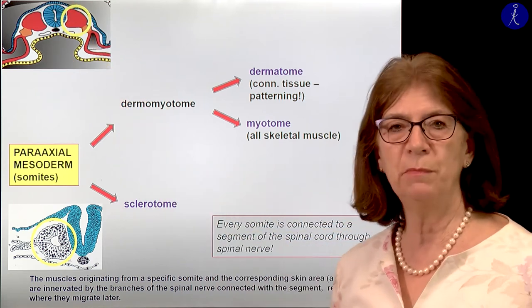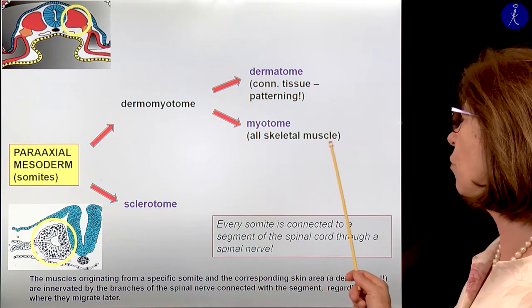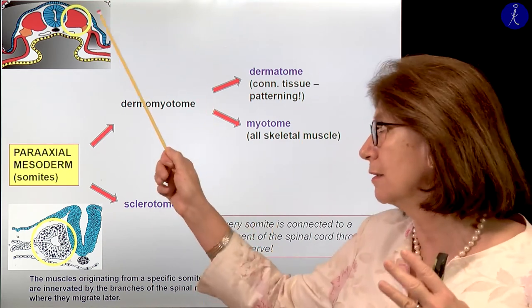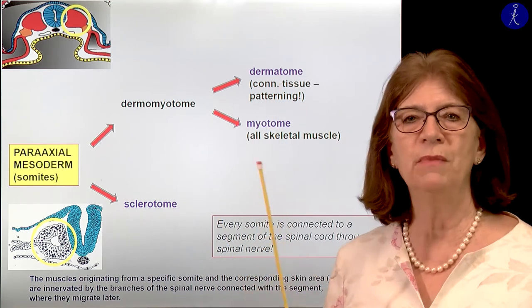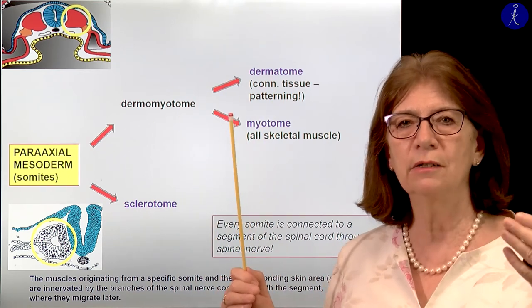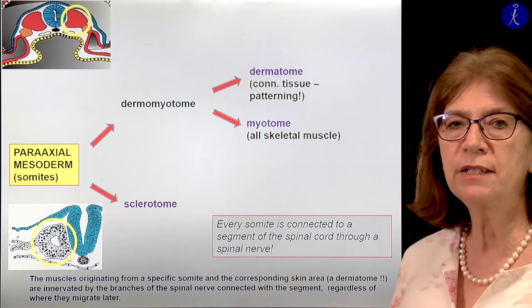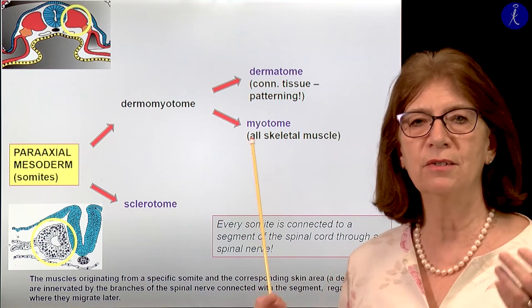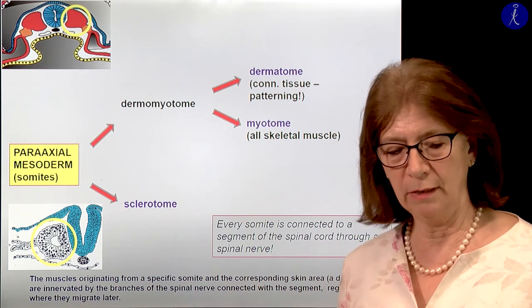This connection also explains where the muscles get their innervation from. From the myotome all skeletal muscles are derived, and these are always innervated by the connected spinal nerve or branches of that spinal nerve. Sometimes these spinal nerves unite to form plexuses like the brachial plexus and lumbar plexus, etc. But even then you can follow back the segmental innervation.